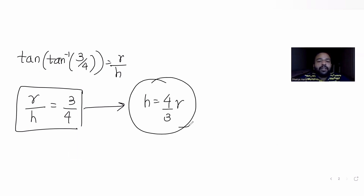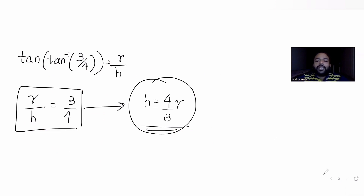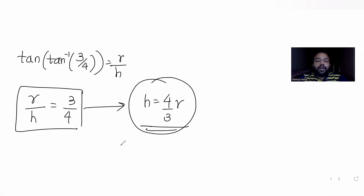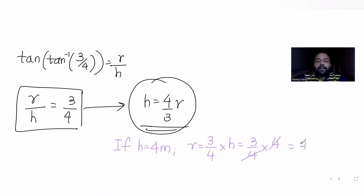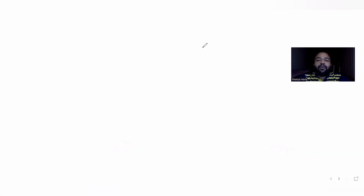Solving further, I get h equals (4/3)r. Now, when height is 4 meters, the radius r becomes (3/4) times the height, that is (3/4) times 4. So when height is 4, your radius is 3.